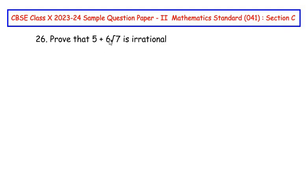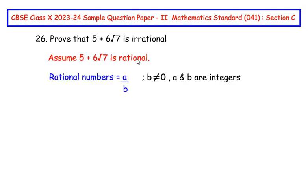Prove that this given number is irrational. So let us begin by contradicting the statement or writing exactly opposite of what they want us to prove. We will assume that 5 plus 6 root 7 is rational.